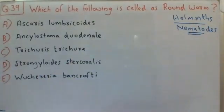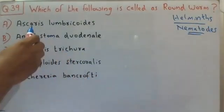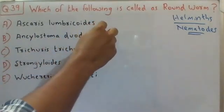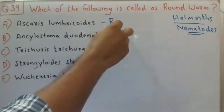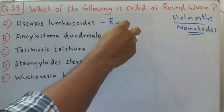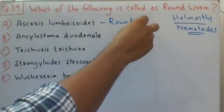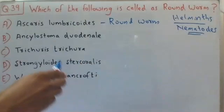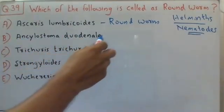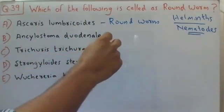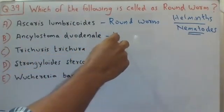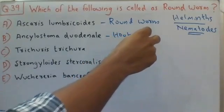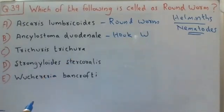Now coming to the choices: Ascaris lumbricoides is the scientific name of roundworm. Whereas B choice, Ancylostoma duodenale, is the scientific name for hookworm.